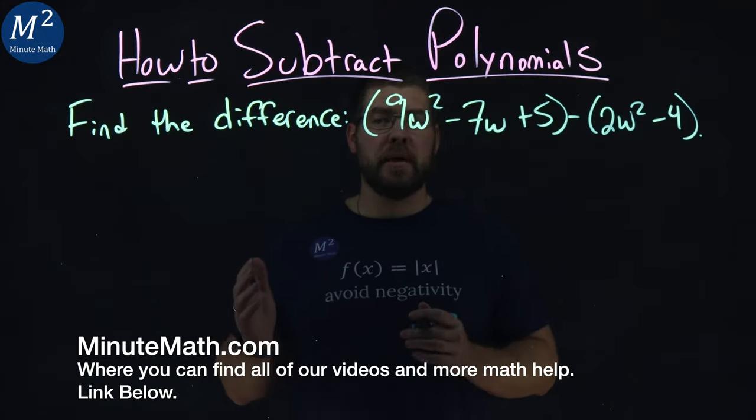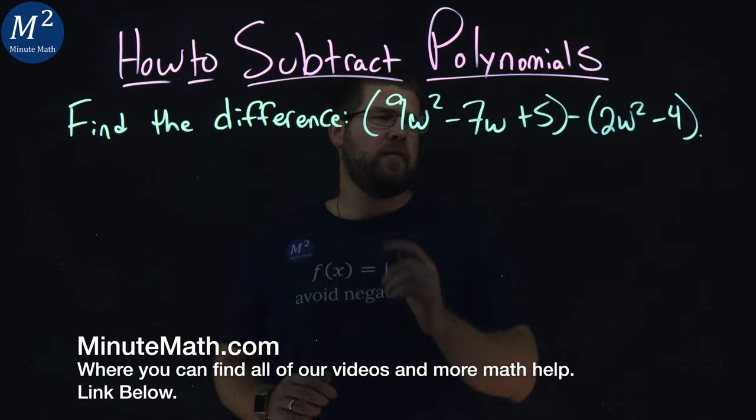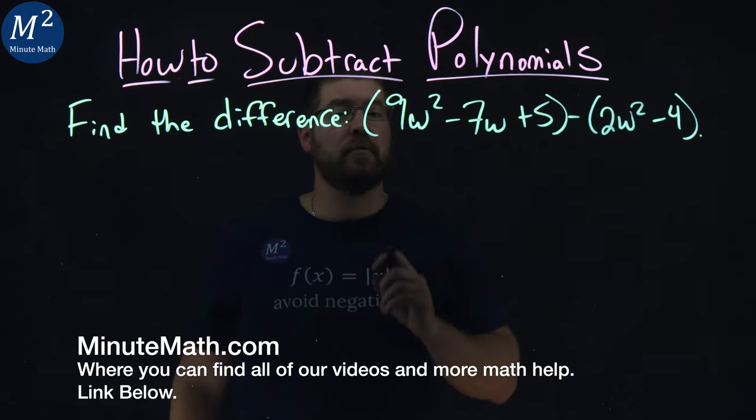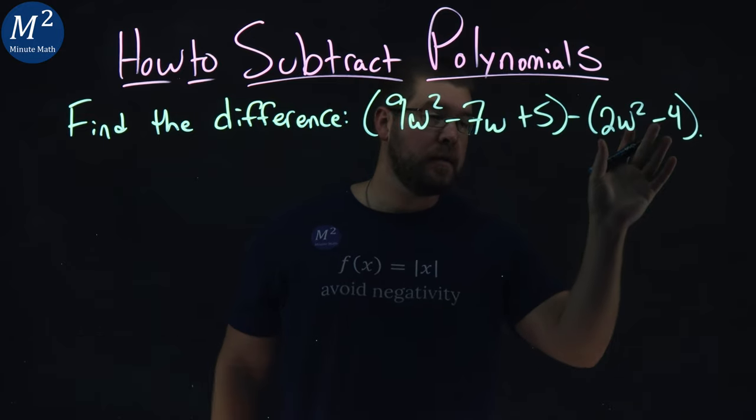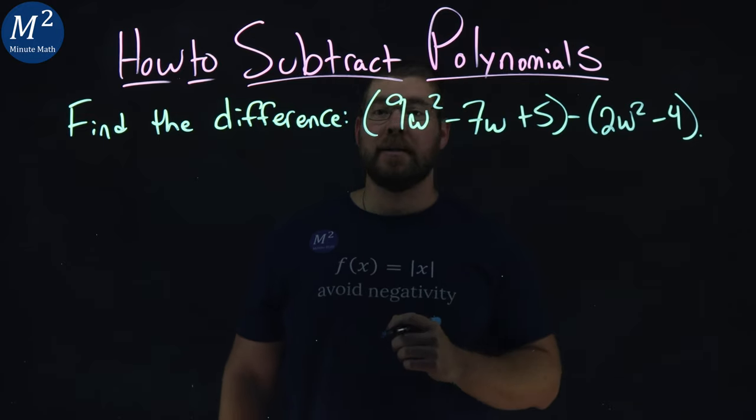We're given this problem here. Find the difference. Our first polynomial is 9w squared minus 7w plus 5, and the second one we're subtracting is 2w squared minus 4.